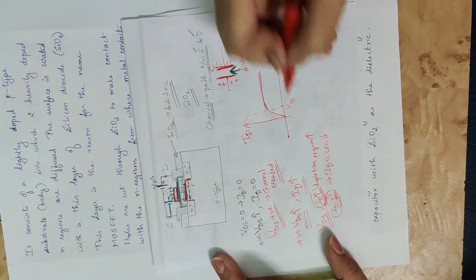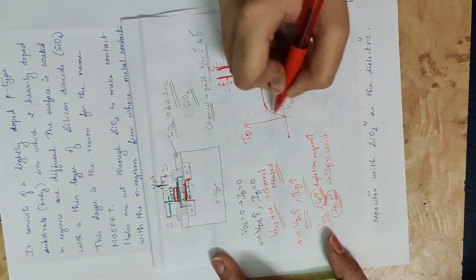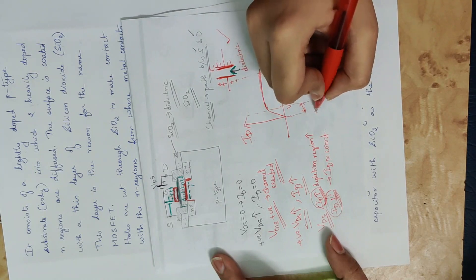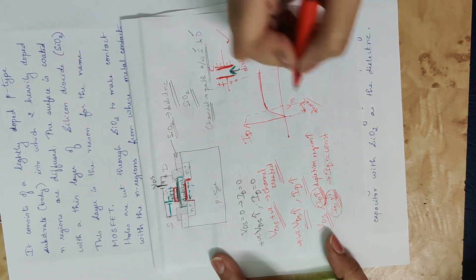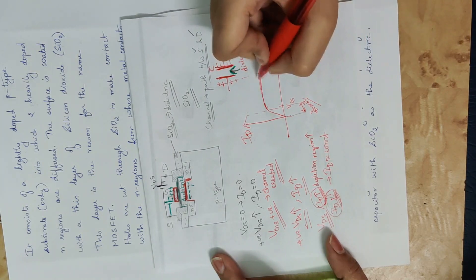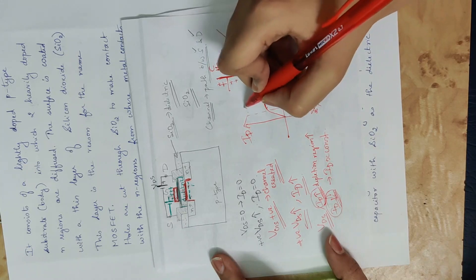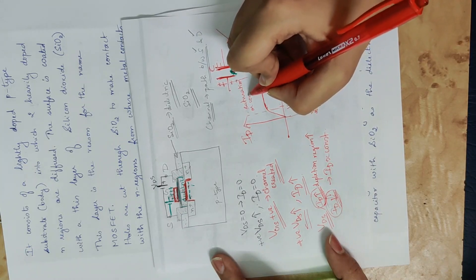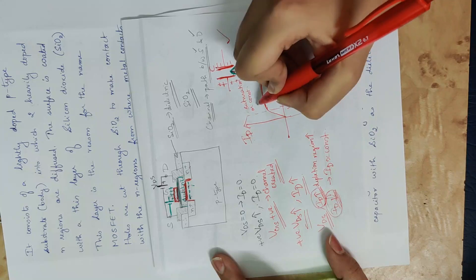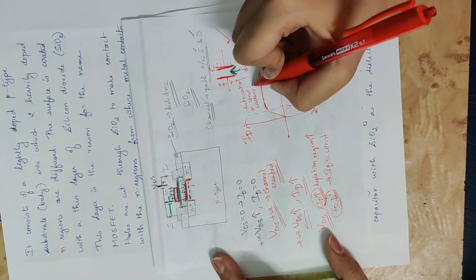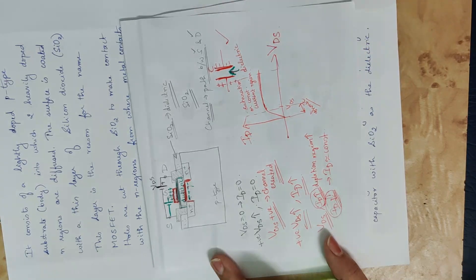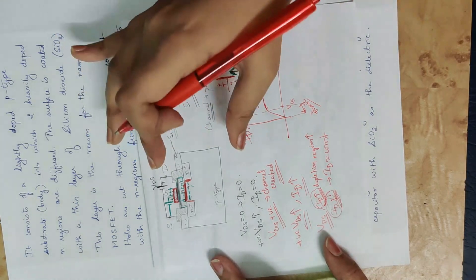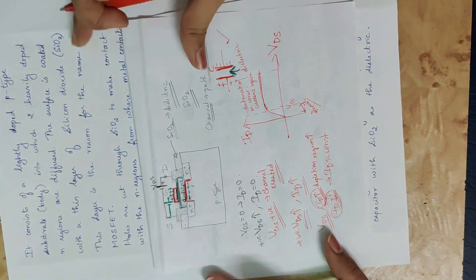Here is our drain characteristic. There is a linear increase in the portion — the ohmic region. Then there is a constant current portion — the saturation region, also called the constant current region. This is the working of E-MOSFET drain characteristics.